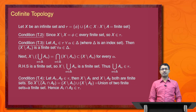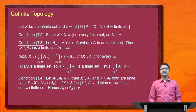For condition 4, let A_1, A_2 belong to tau, meaning X minus A_1 and X minus A_2 are both finite sets. Then X minus (A_1 intersection A_2) equals (X minus A_1) union (X minus A_2). Since X minus A_1 and X minus A_2 are both finite, their union is also finite. This implies from the definition that A_1 intersection A_2 belongs to tau. This topology is called the cofinite topology, because any set A belonging to tau must have a finite complement.